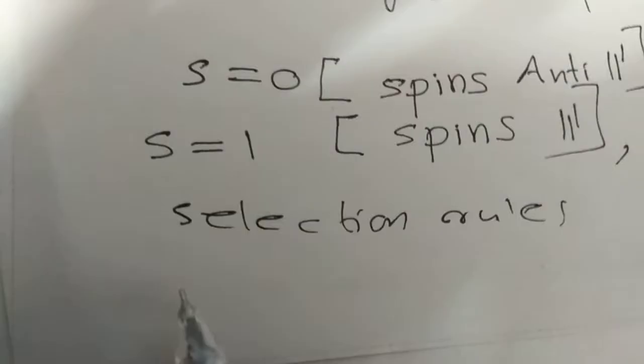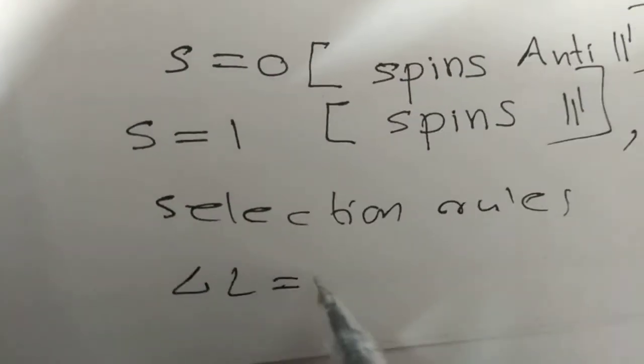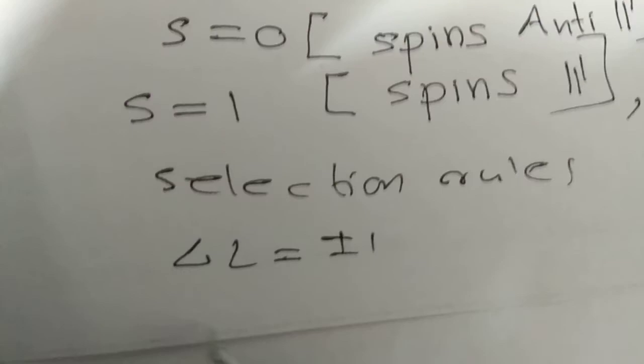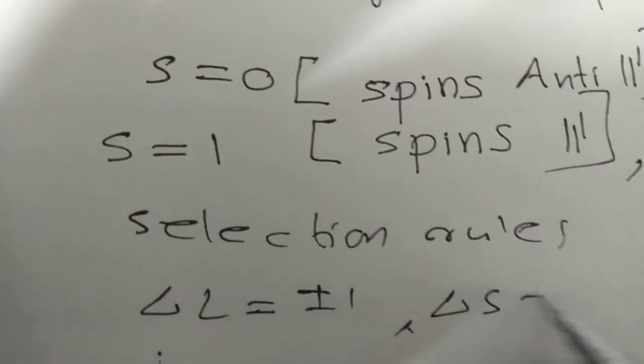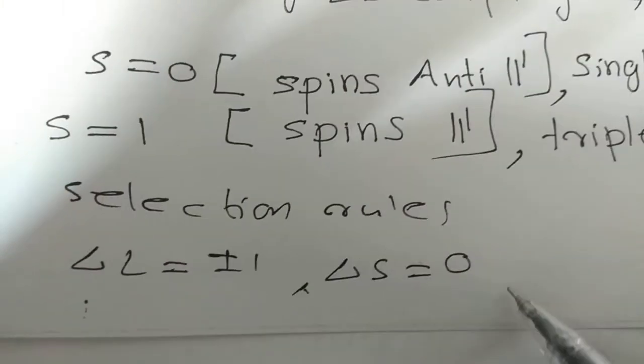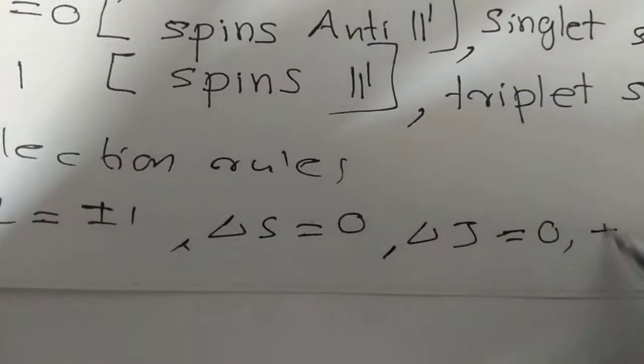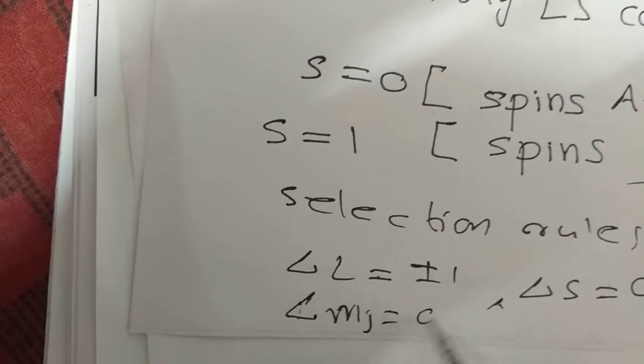The selection rules are: delta L is equal to plus or minus 1, delta S is equal to 0, delta J is equal to 0 or plus or minus 1, and delta mJ is equal to 0 or plus or minus 1. These are the selection rules.